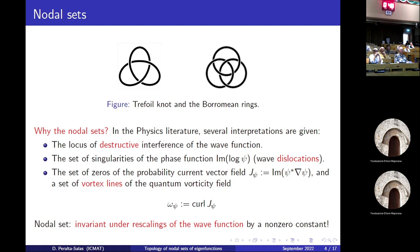From the mathematical viewpoint, it's very relevant that you could look at other level sets of the function. Why the zero? The most important aspect of the zero set is that it's invariant under conformal changes. If you multiply your function by some constant, then the zero set remains, while any other level set changes. So it's special, this property. And it's related to the singularities of the phase function.